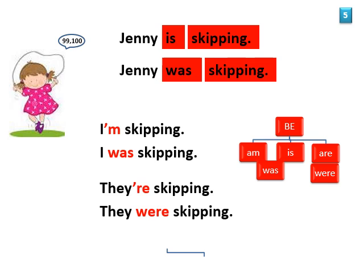Sometimes you have to use two verbs together. For example, if you want to show continuous action: 'Jenny is skipping.' In this sentence, skipping is the main verb — it's the more important verb because it shows you what Jenny is doing. The helping verb here is 'is,' a be verb. The main verb is very lazy — it doesn't do any work except show the meaning.